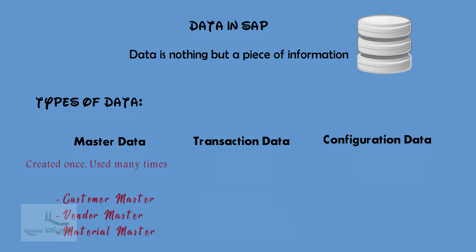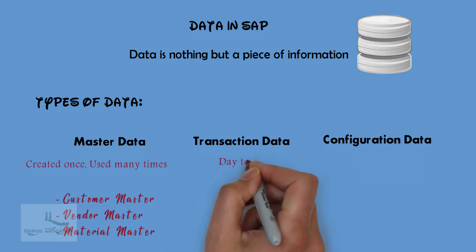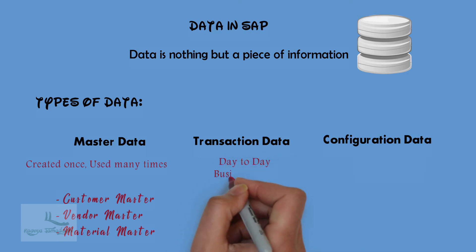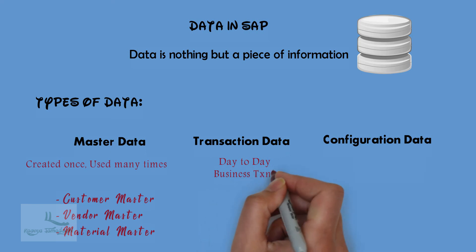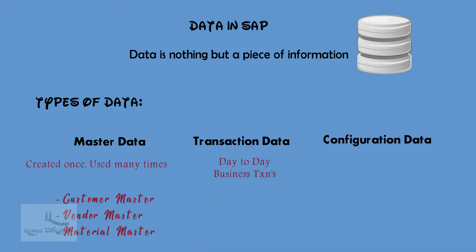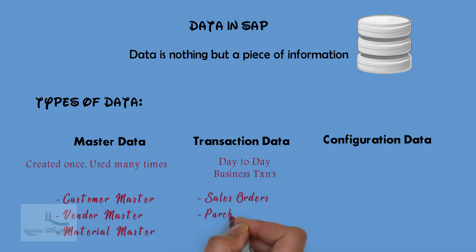And next, we have transactional data. What does transactional data mean? Transactional data is nothing but the documents that are created during the day-to-day business activity, like sales orders, purchase orders, production orders, etc.